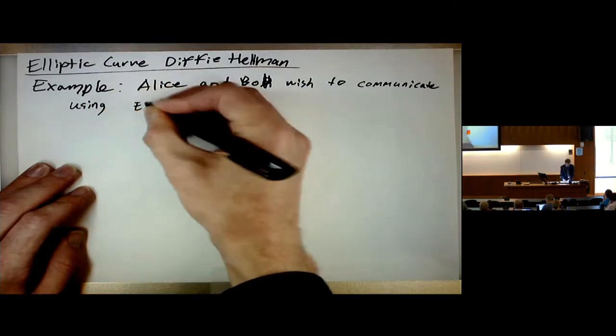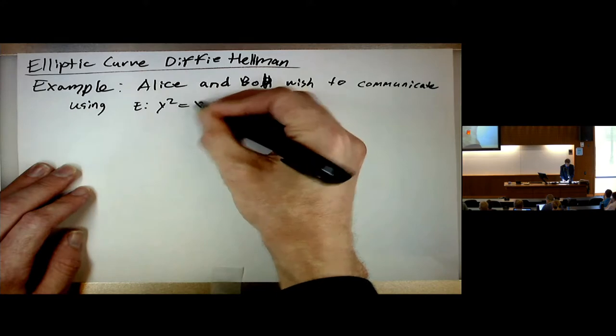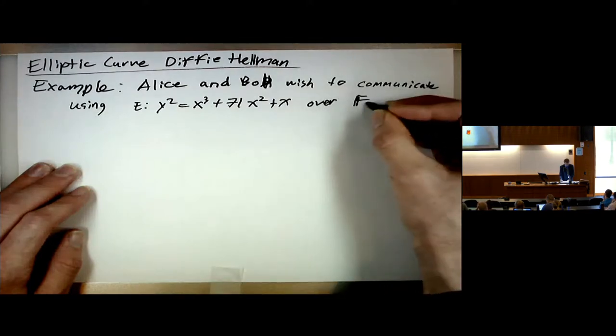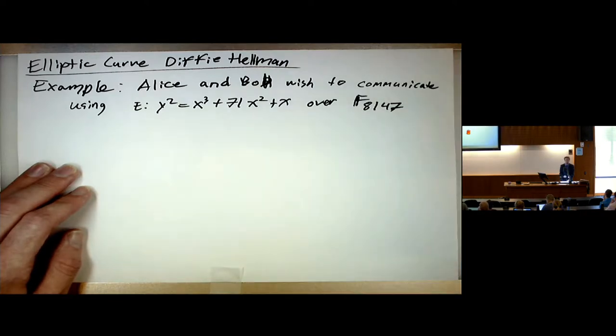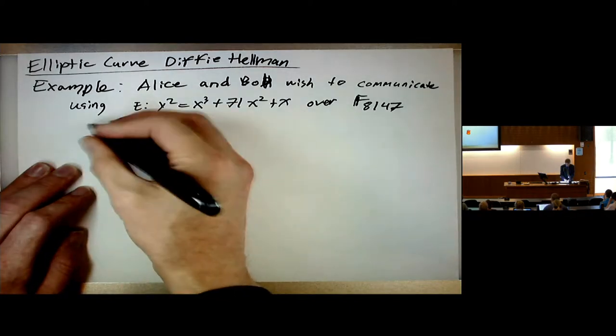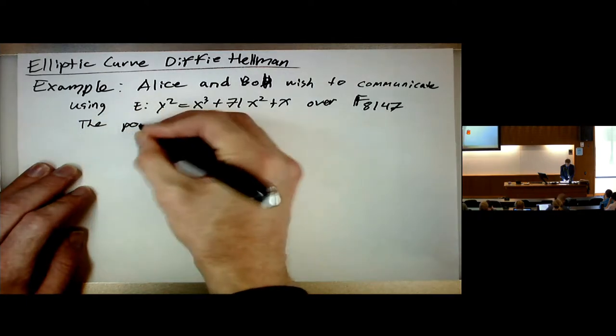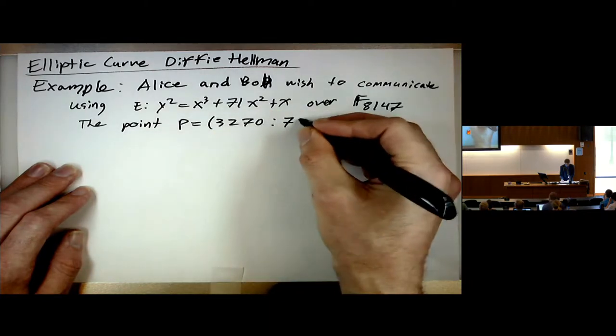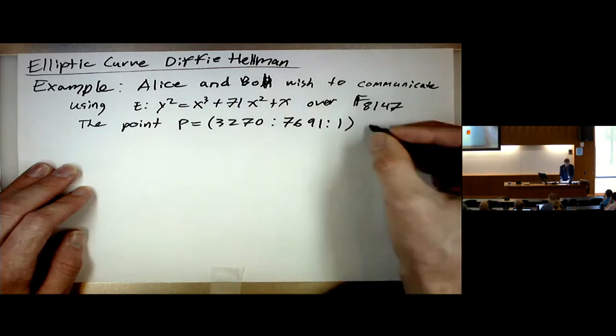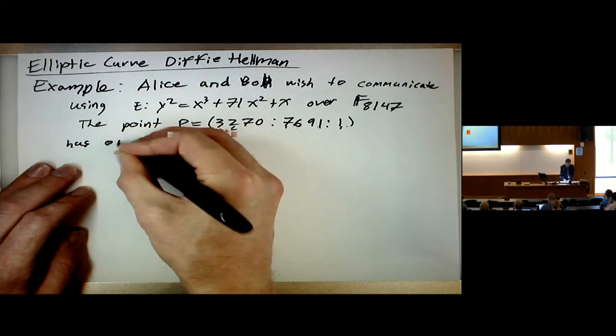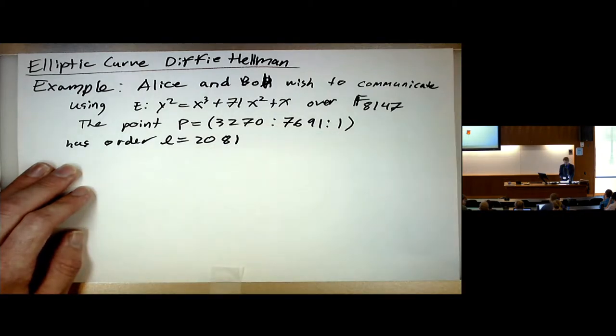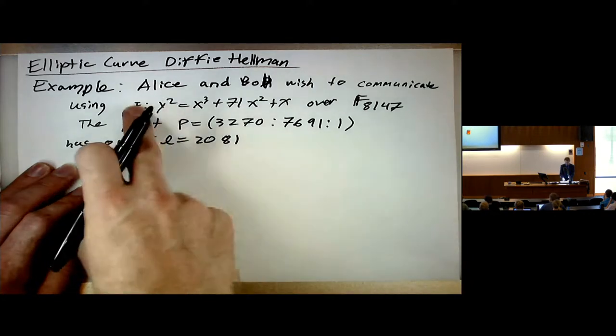Alice and Bob, chosen for the first letters of their names, wish to communicate using E: y² = x³ + 71x² + x over F_8147. That's a prime field. The point P equals (3270, 7691) has order L = 2081, which is the largest prime dividing the order of E over this field.